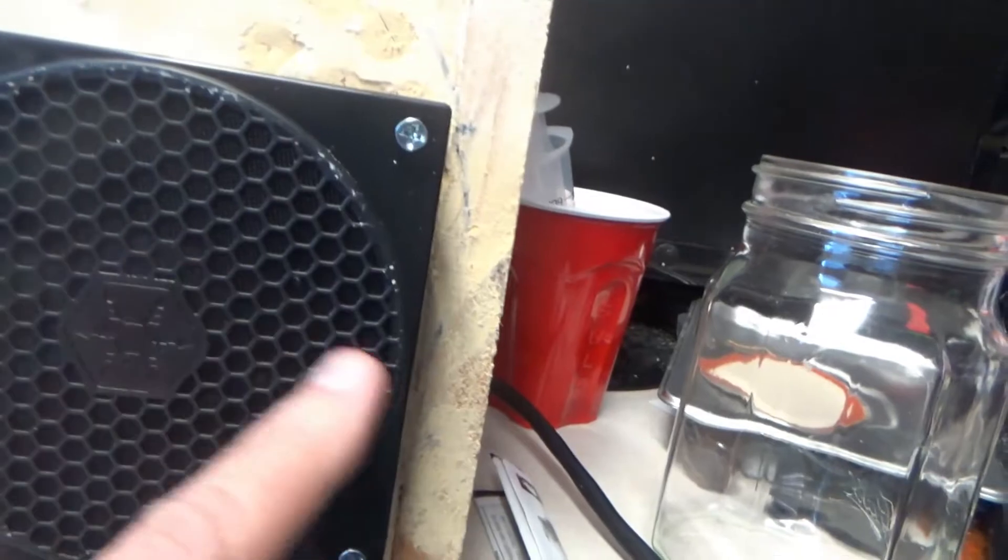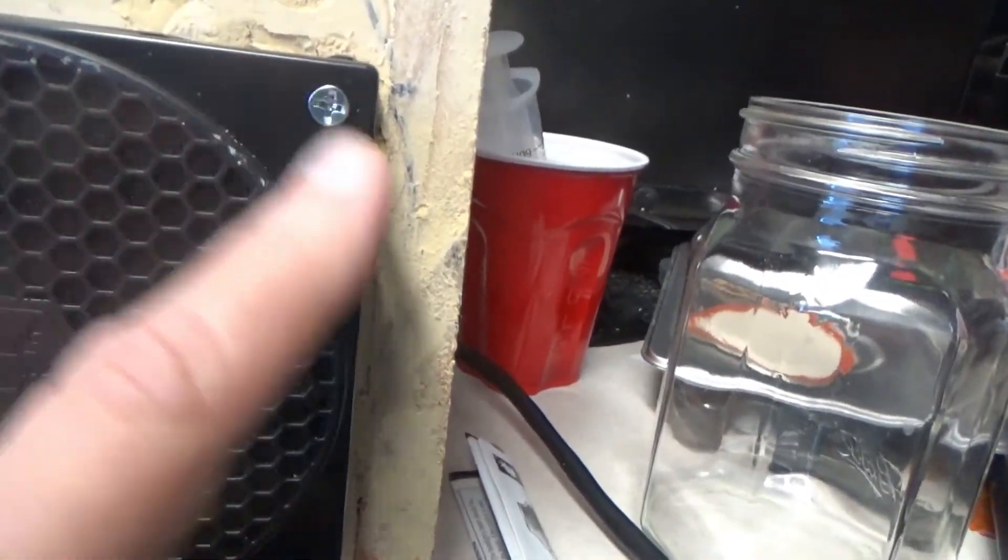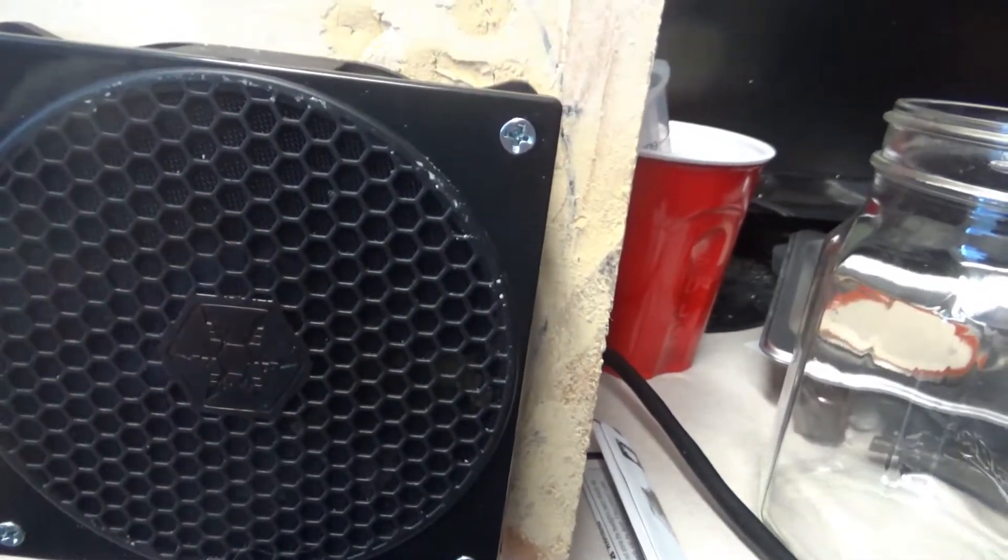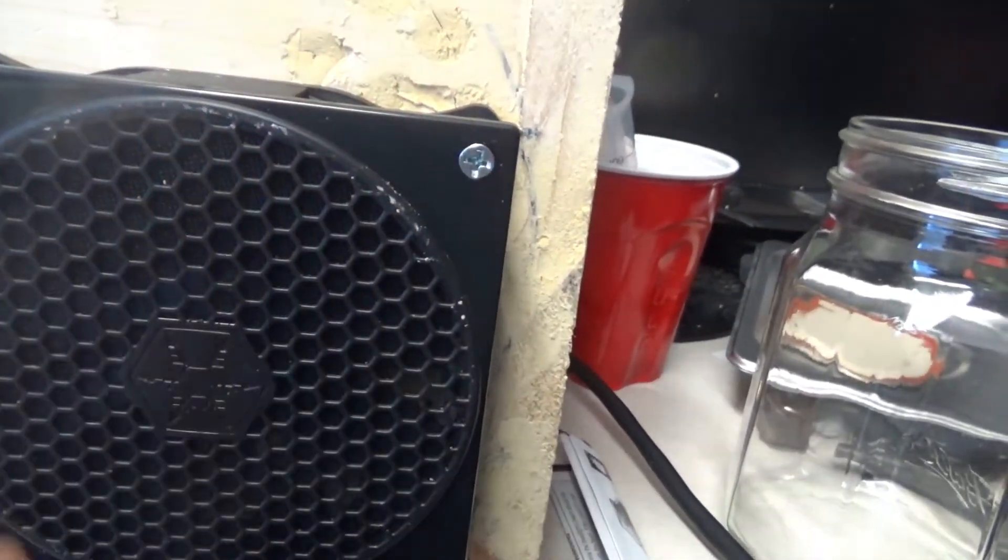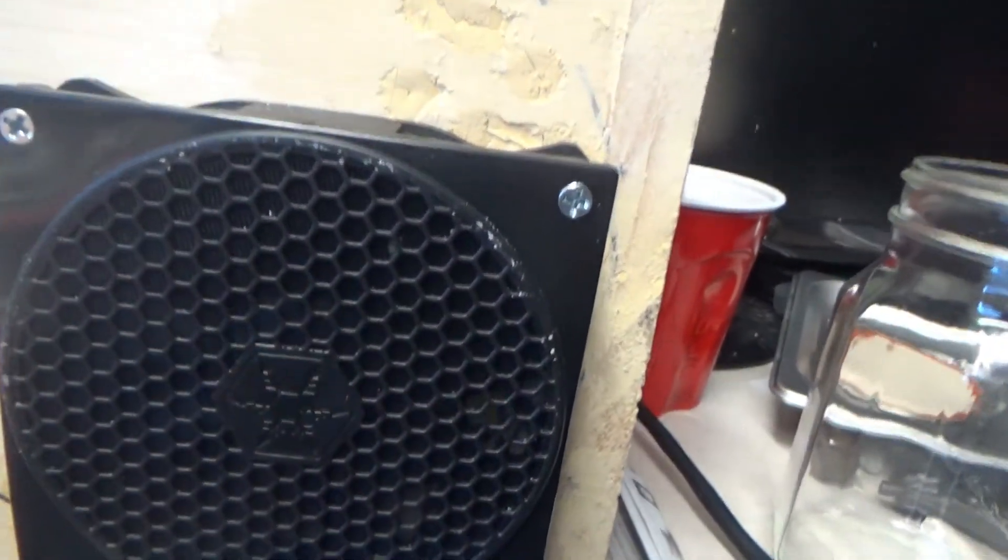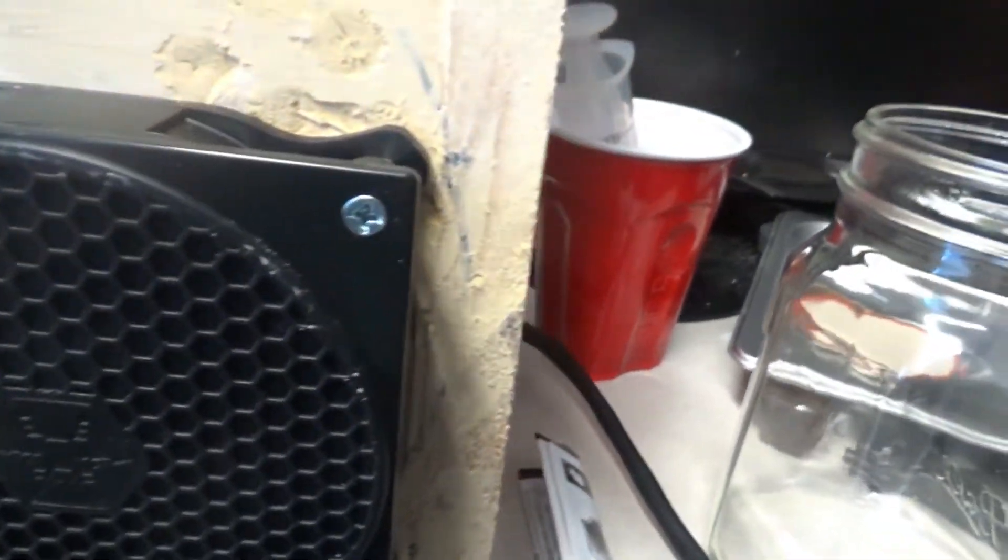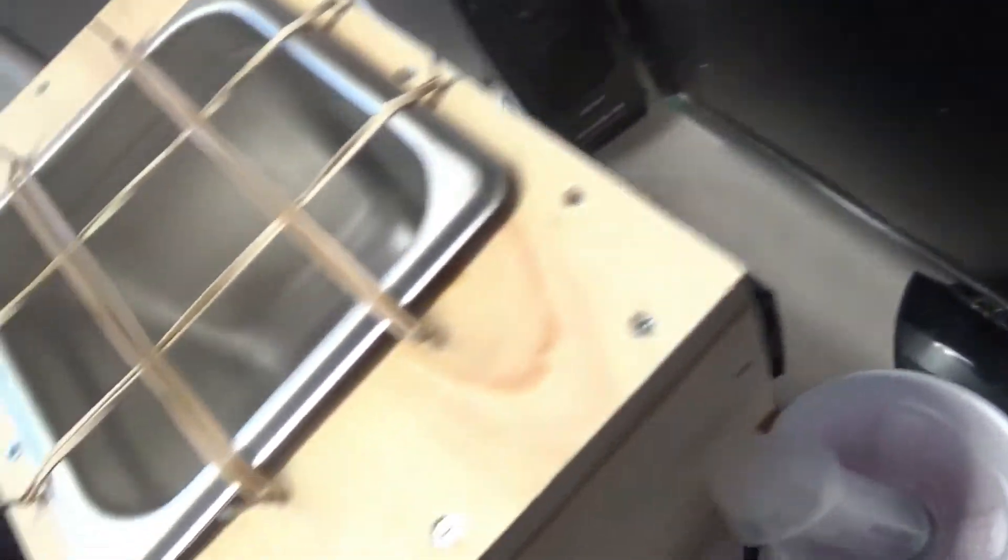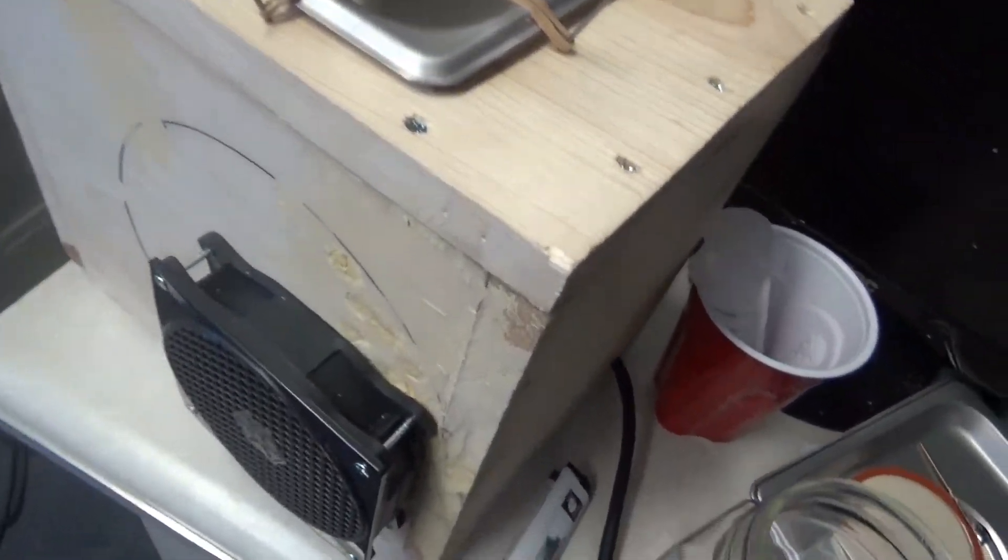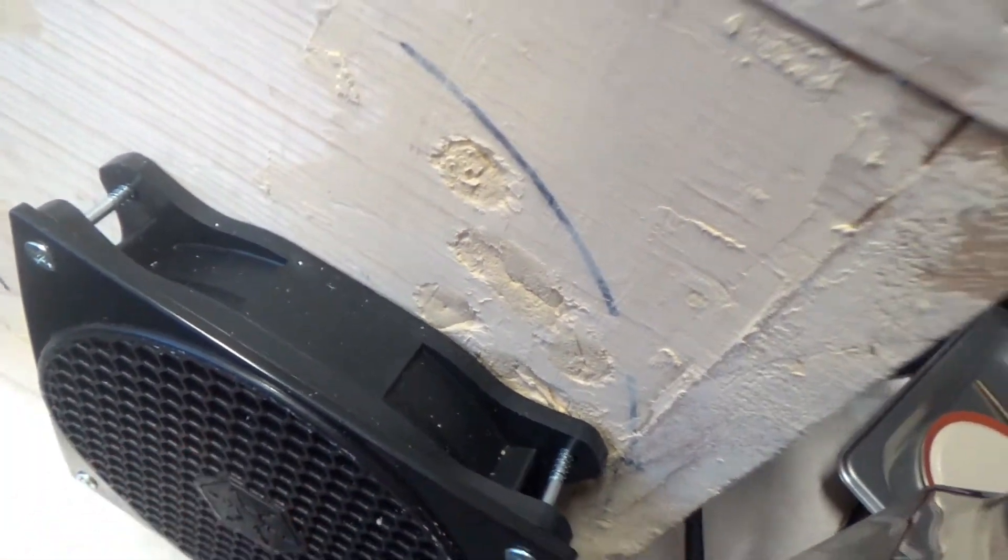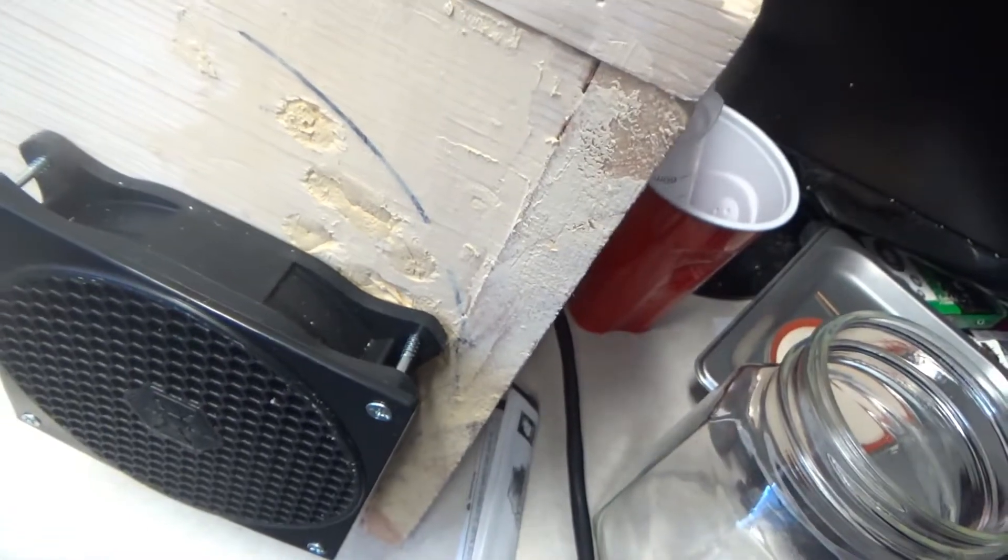So I went to a smaller fan rated at basically the same cubic feet per minute, and I have a big hole underneath here. I'm still using a push-pull configuration with two of the smaller fans. And because it's a smaller fan, I was able to get a shield, so now there's nothing where little fingers can get in there. It's a safer unit.